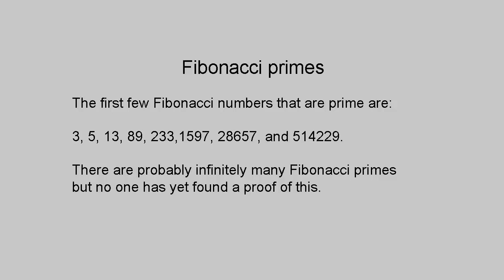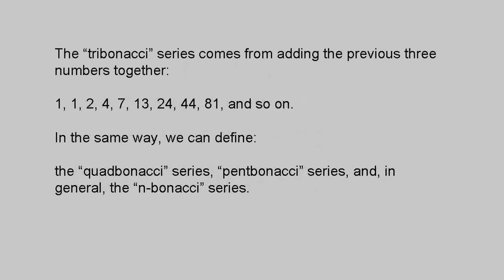The Fibonacci sequence is a special case of the Lucas sequence, which we'll look at in another video. The Tribonacci series, as it's called, is made by adding the last three digits: 1, 1, 2, 4, 7, 13, 24, 44, 81, and so on. And in the same way, we can define the Quadbonacci series, the Pentabonacci series, all the way up to the n-Bonacci series. Each ratio of successive terms forms a special constant analogous to phi.